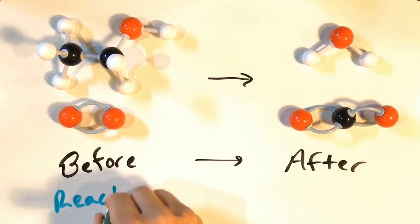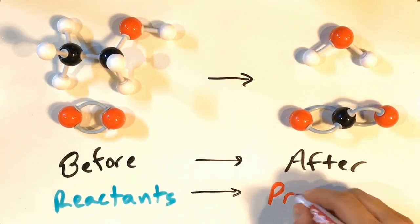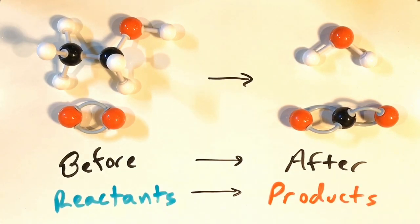One thing to recognize with chemical reactions is that we're really talking about a before and after situation. The chemicals that exist before the reaction takes place, we call the reactants. While the chemicals that exist after the chemical reaction has taken place, we call the products. Do you think you can see what is wrong with the way that this reaction is represented here?